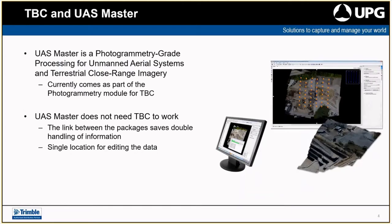UAS Master is a photogrammetry grade processing package for unmanned aerial surveys — for close range and also aerial above-ground capture. There are two systems within UAS Master: one is aerial top-down processing looking at the ground, and the other is close-range processing for flying around buildings or structures — that more vertical 3D element. Both options are contained within UAS Master.